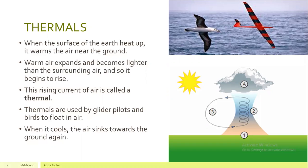A thermal is basically the rising current of air. When the surface of the earth heats up, it warms the air near the ground. This warm air expands and becomes lighter than the surrounding air, so it begins to rise — moving from higher concentration to lower concentration. Thermals are used by glider pilots and birds to stay aloft. When the air cools, it sinks towards the ground again.